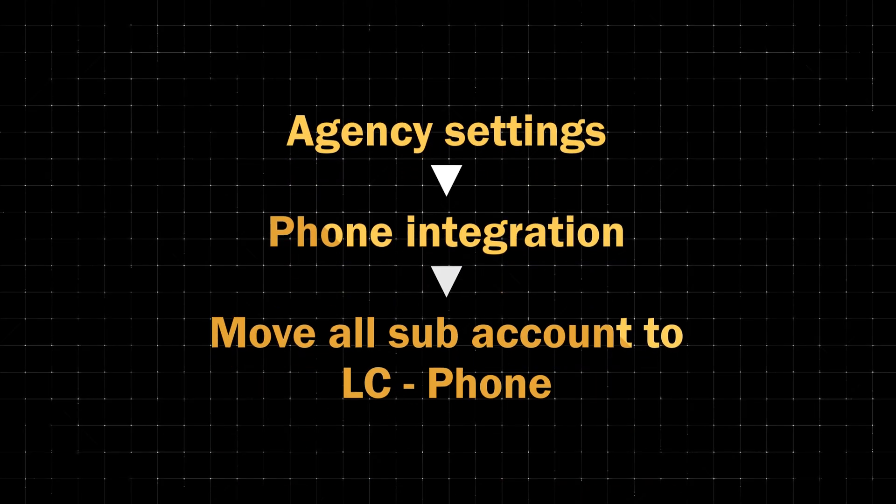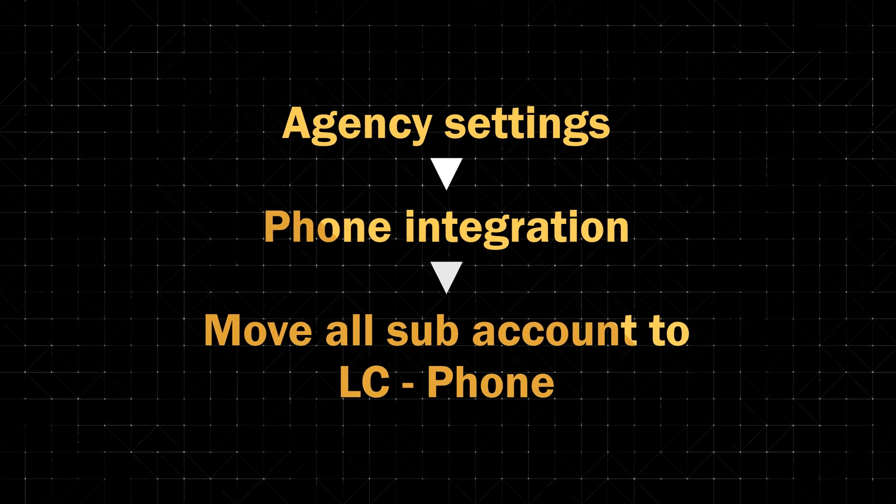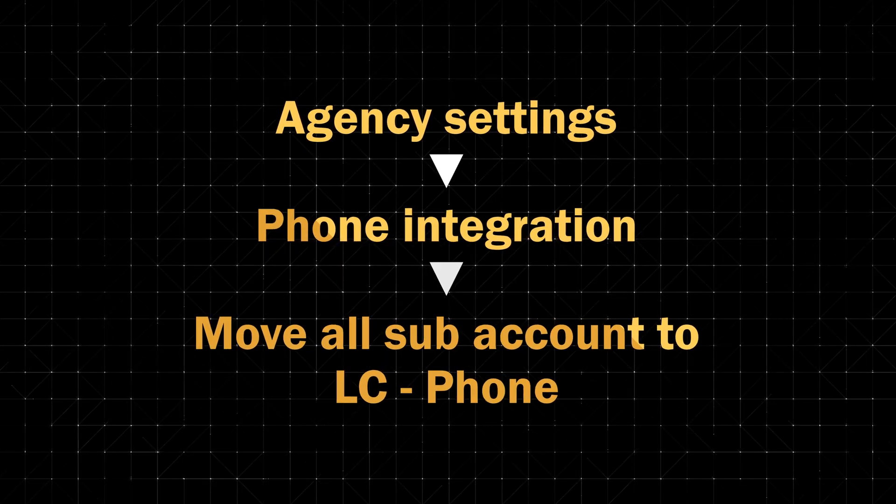First things first, you need a phone number that works inside Go High Level. Go High Level used to use Twilio for all of this, and technically still does under the hood, but you don't need to mess with Twilio anymore. Just use LC Phone, which is built directly into Go High Level. It's easier, it's cheaper, and you don't need API keys or another dashboard. To switch over, go to your agency settings, click phone integration, hit the button that says move all subaccounts to LC Phone, and that's it. Your whole account will now be using LC Phone by default, which means a smoother setup and less stress.